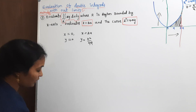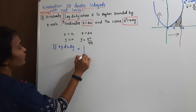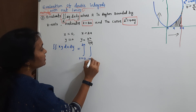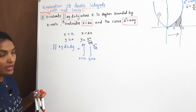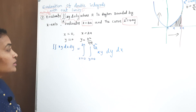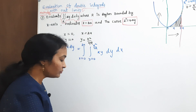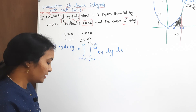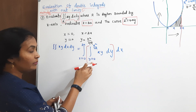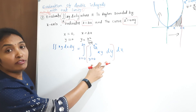The given double integral is the double integral of xy dx dy. We know the x limits are 0 to 2a, and the y limits are 0 to x²/4a. Since x limits are constant and y limits are in terms of x, we integrate with respect to dy first — that is, y is the inner integral.